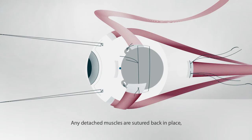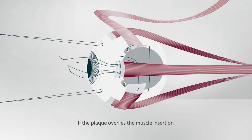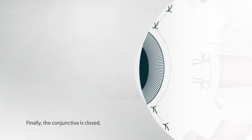Any detached muscles are sutured back in place, ensuring that the knot to limbus distance is the same as before. If the plaque overlies the muscle insertion, it is attached to the sclera with slings or to the mattress suture. Finally, the conjunctiva is closed, ensuring that the sclera is completely covered.